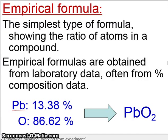This is lesson 3 of unit 8. In this lesson, we'll talk about empirical formulas. An empirical formula is the simplest type of formula showing the ratio of atoms in a compound, showing you how many lead, for example, for how many oxygen.